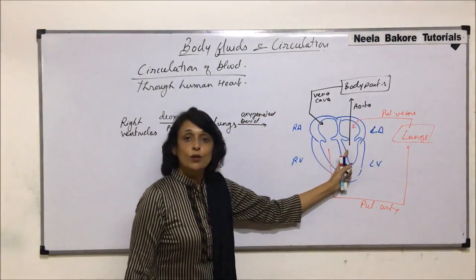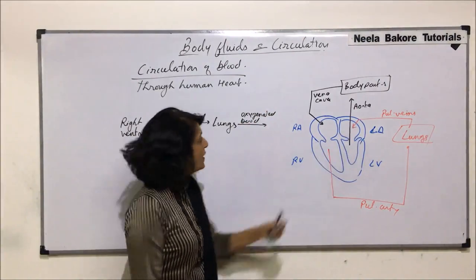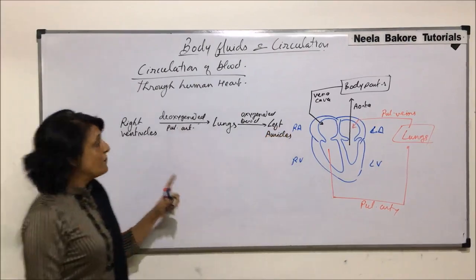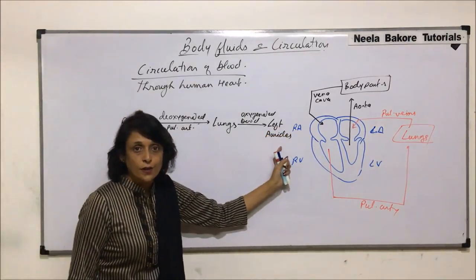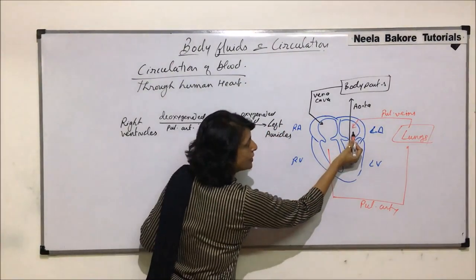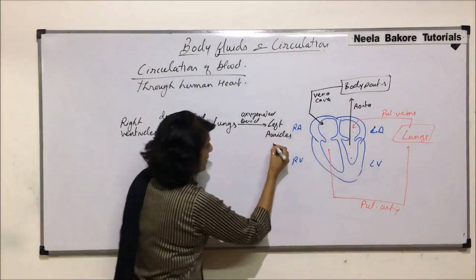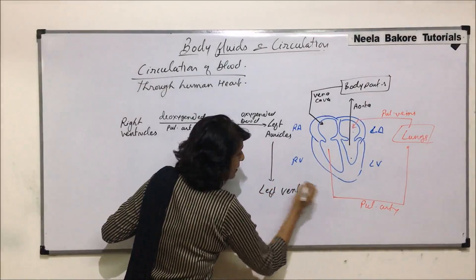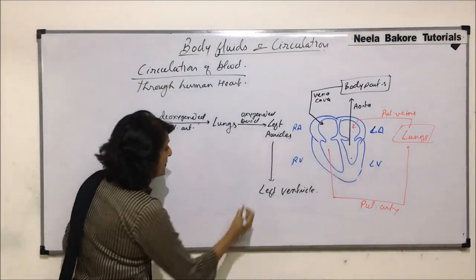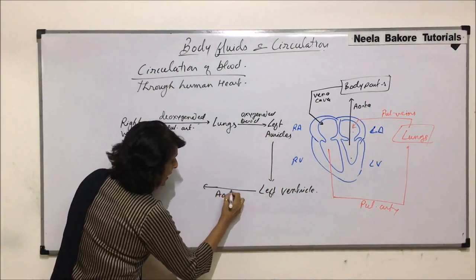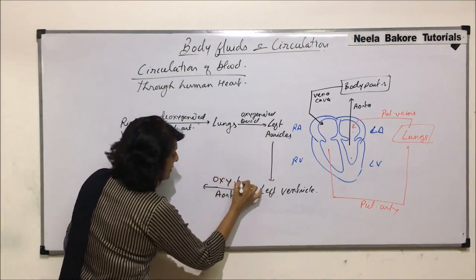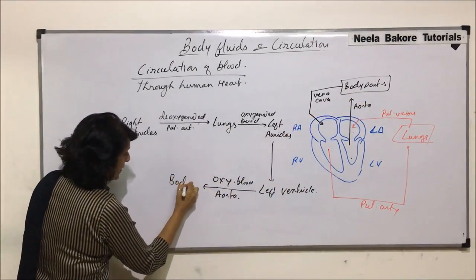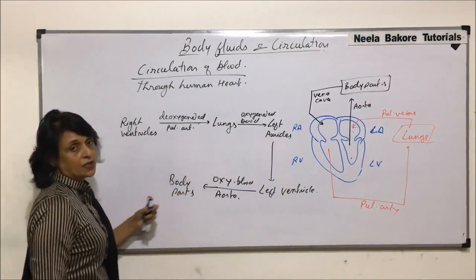From the lungs, oxygenated blood comes back into the heart and the compartment which receives it is the left auricle. From the left auricle, the oxygenated blood comes into the left ventricle. From the left ventricle, the oxygenated blood is pumped through the aorta to the body parts.